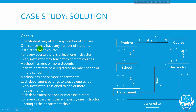One course may have any number of students — so it's a star (many) relationship. Instructors teach courses. For every course there is at least one instructor. So the multiplicity is one-to-many. Every instructor teaches zero or more courses — zero to many.